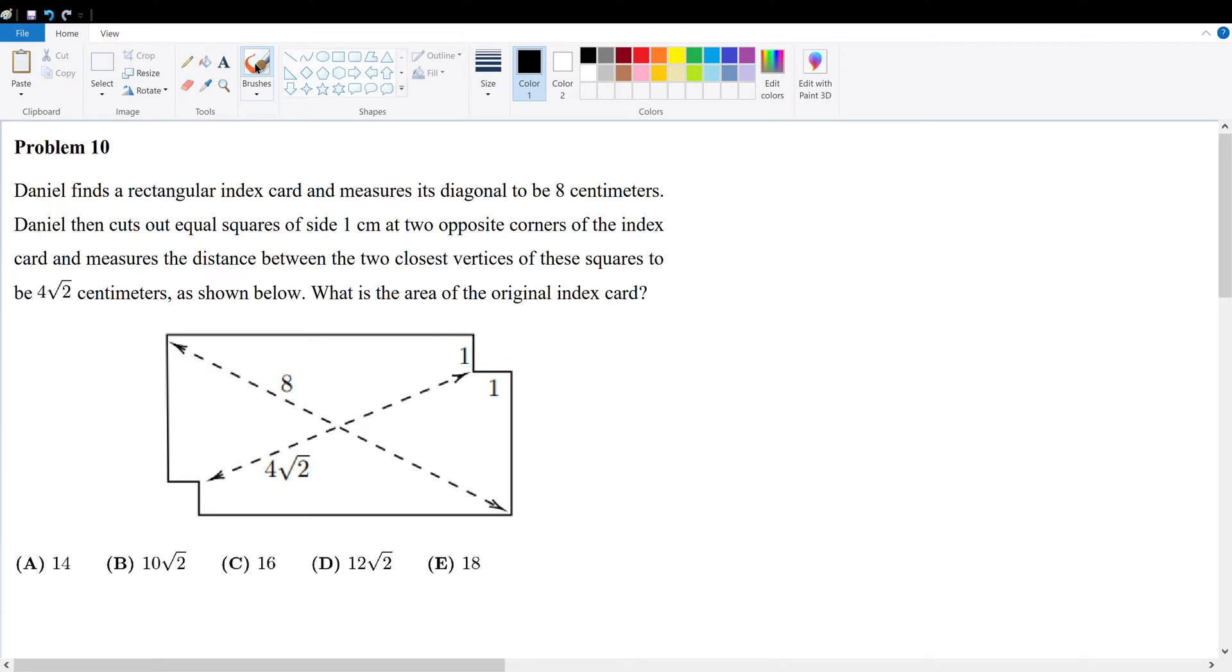Problem 10. Daniel finds a rectangular index card and measures its diagonals to be 8 cm. Daniel then cuts out equal squares of side length 1 cm on opposite corners of the index card and measures the distance between the two closest vertices of these squares to be 4√2 cm, as shown below. What is the area of the original index card?